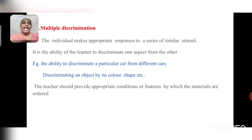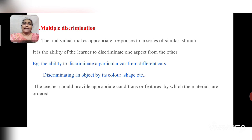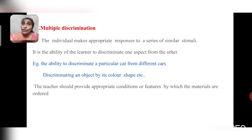The next level is multiple discrimination — the ability to discriminate and categorize. The individual makes appropriate responses to a series of similar stimuli. For example, if a child sees many cars on the road and can distinguish one from another by specific features, he has attained multiple discrimination. Similarly, if he can call each of his many friends by their own name, multiple discrimination has taken place.